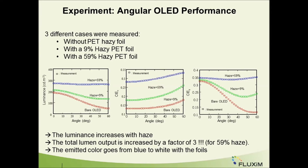These are the experimental results obtained for these devices. In red are the results for the OLED without any scattering layers, in green are the results with a 9% AZ-PAT foil, and in blue are the results with a 59% AZ-PAT foil. The luminance strongly increases with the AZ-PAT foil. Also interesting is that the emitted color — represented by the CIEX and CIEY quantities — strongly changes with the AZ of the PAT foil, going from a blue-emitting OLED without PAT foil to almost a white-emitting OLED with the 59% AZ-PAT foil.